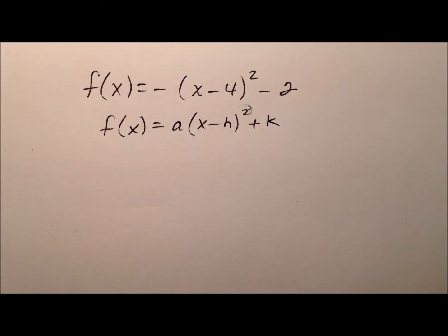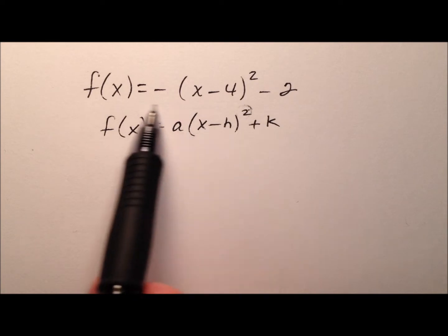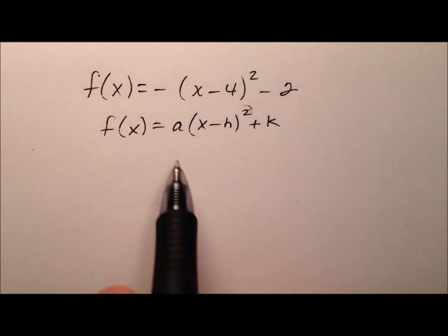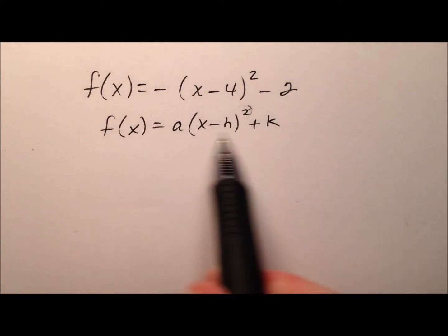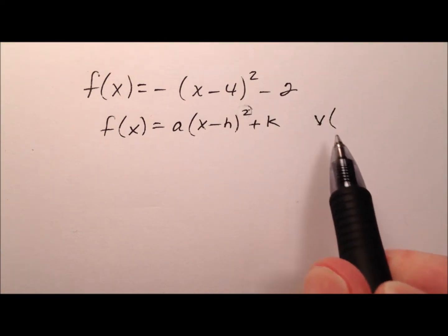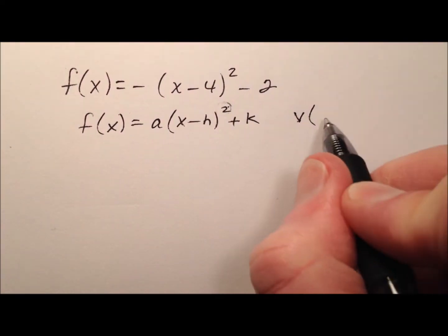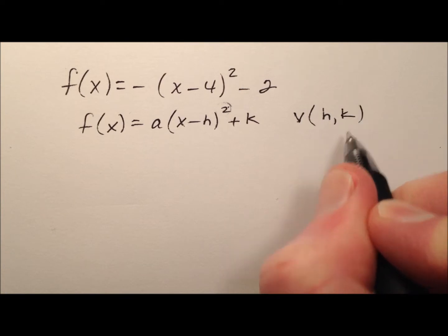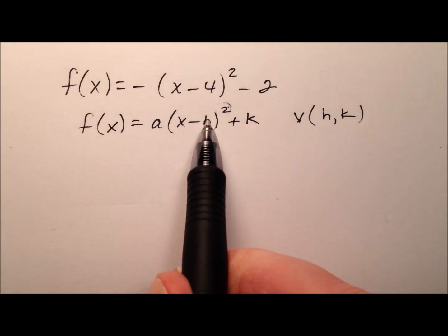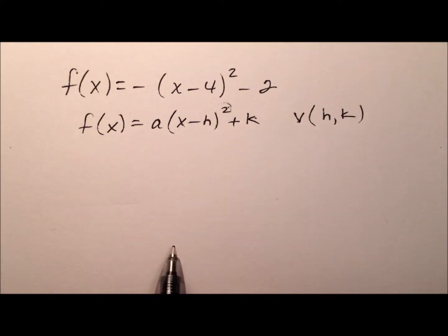One thing that's really nice about vertex form that standard form doesn't offer us is that simply by looking at a function, we can tell what its vertex is going to be. So when it's in vertex form, the vertex — this ordered pair v — will be given by the ordered pair h, k.